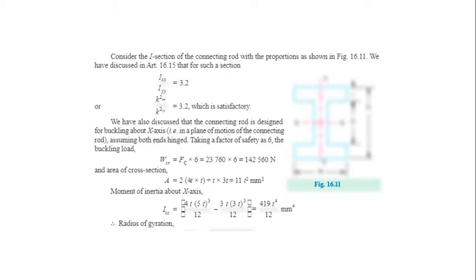The buckling load W_cr is the load on the connecting rod due to self-weight, a concept from the column chapter. The buckling load is: W_cr = F_c × 6, where 6 is the assumed factor of safety. This is a design-oriented assumption. Multiplying both values gives W_cr in newtons.